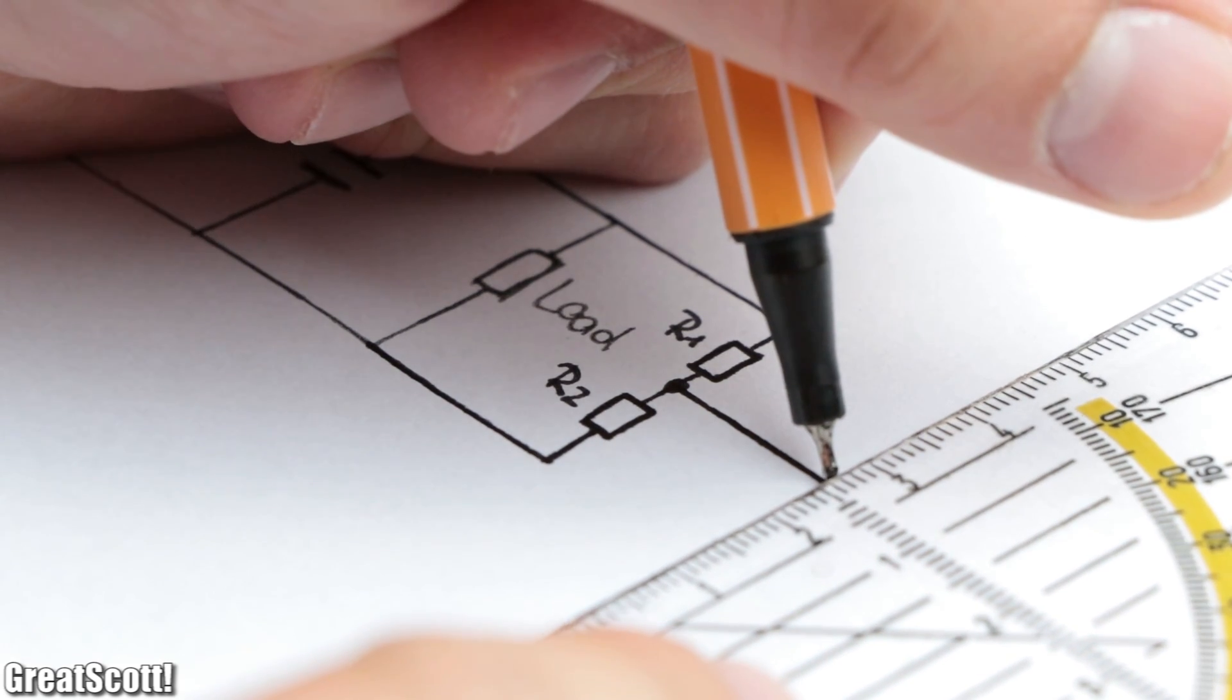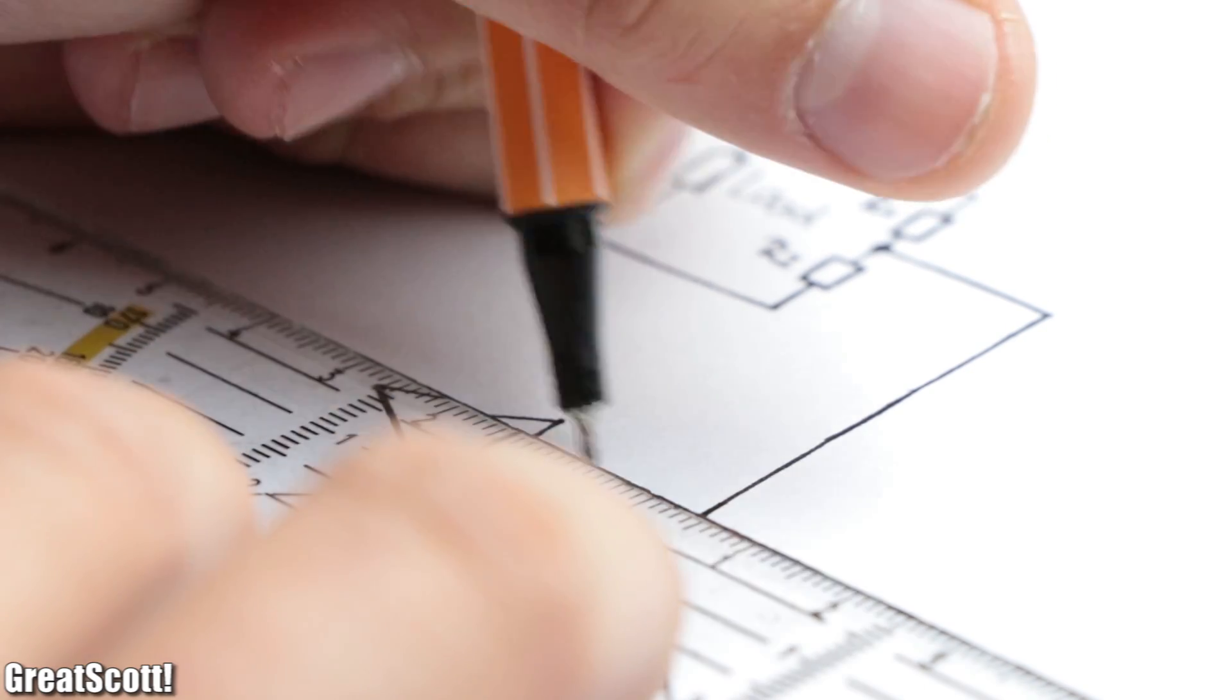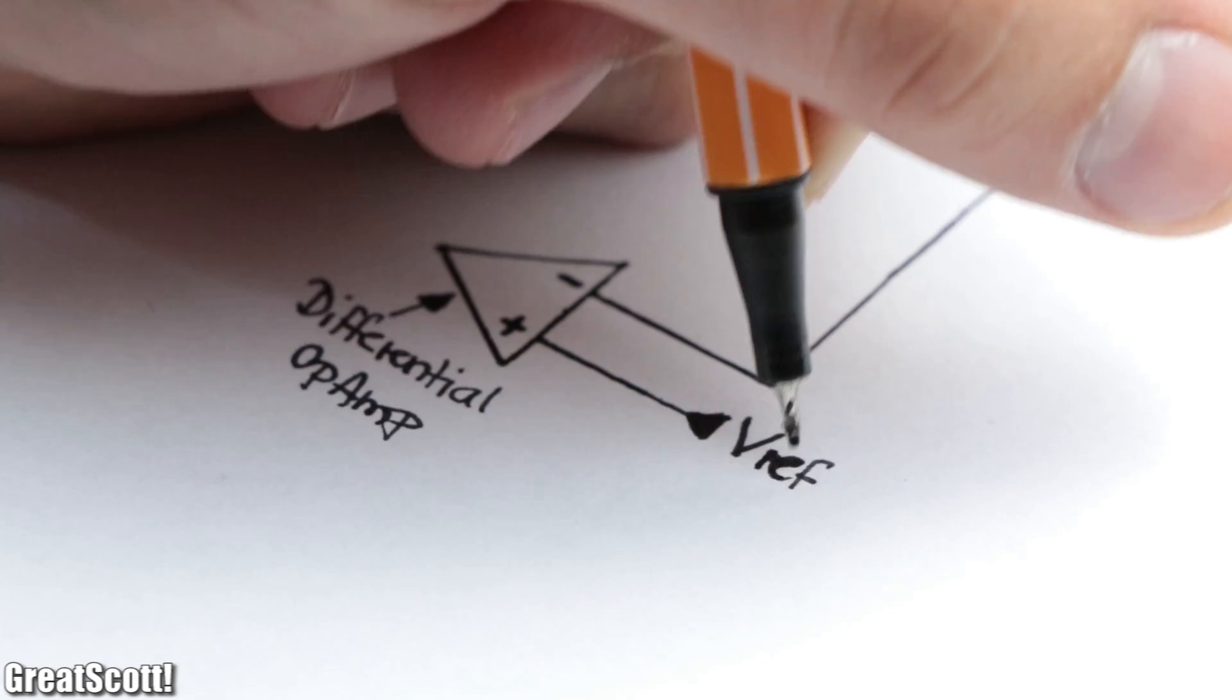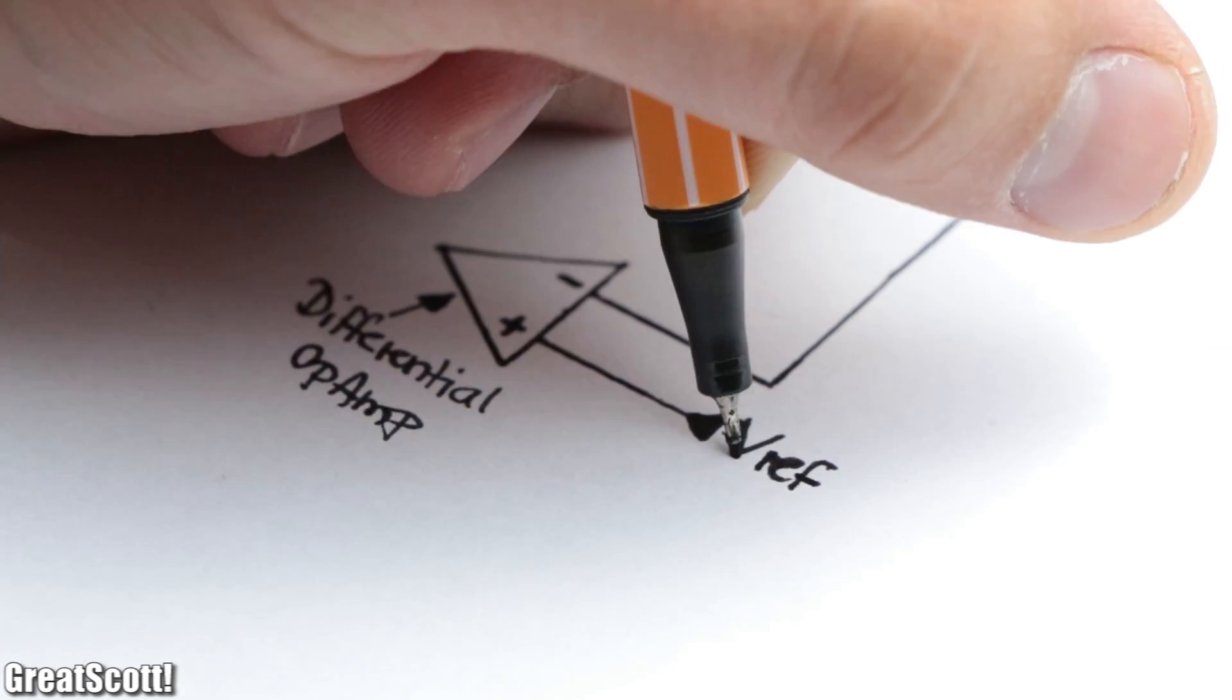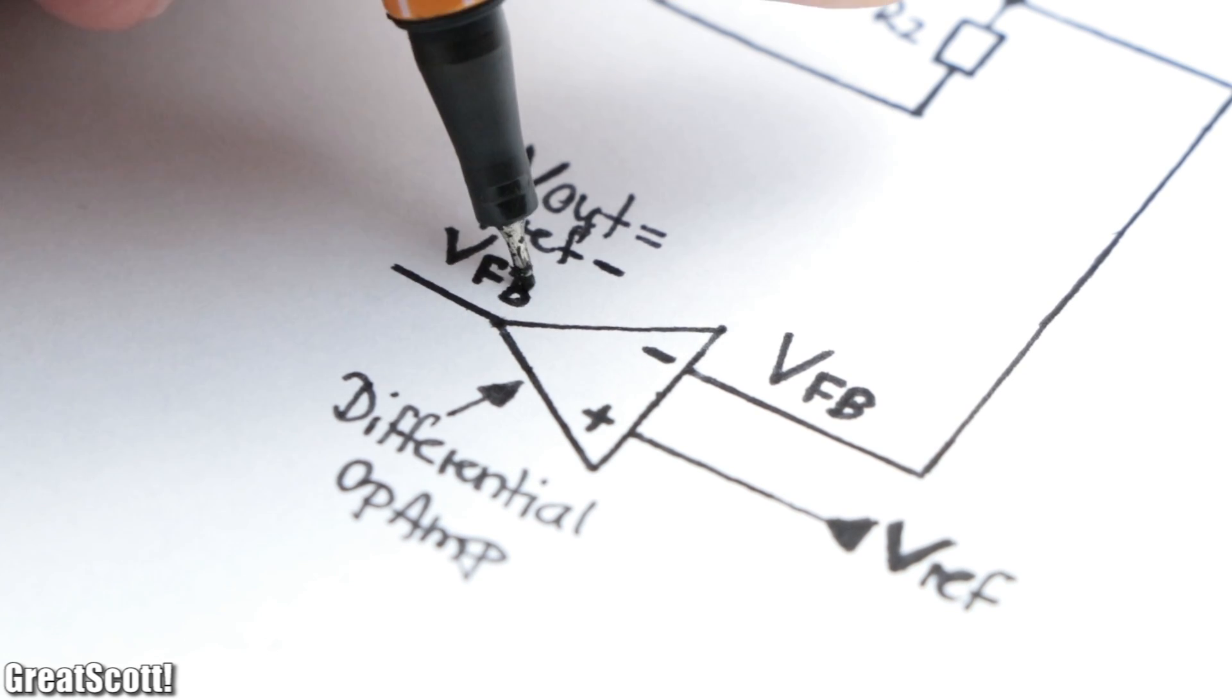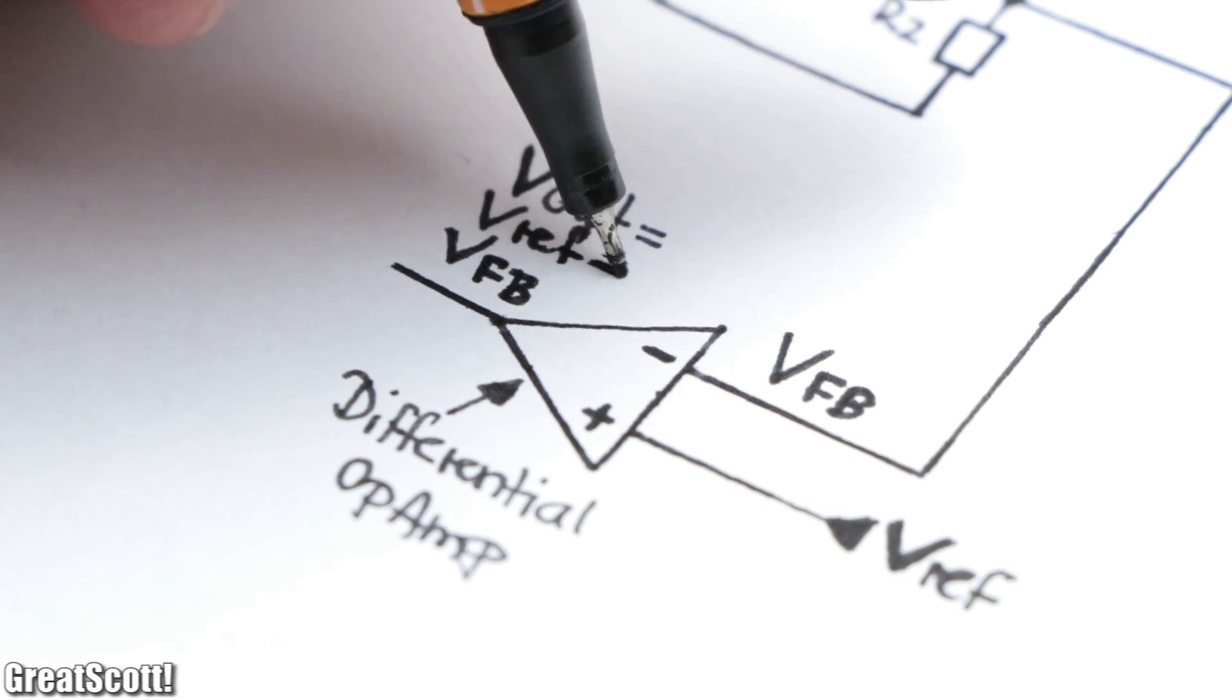First off, we need to build a voltage divider on the output which feeds into the inverting input of a differential op-amp configuration. That means since we got a constant voltage reference on the non-inverting input, the output voltage will be the reference voltage subtracted by the feedback voltage of the boost converter.